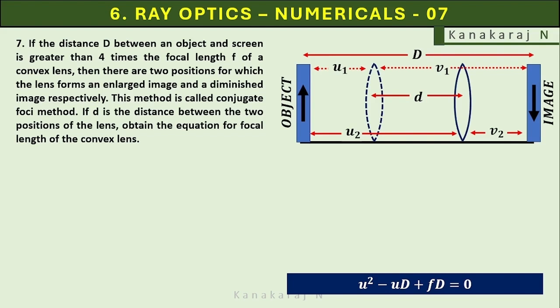The difference between the two positions of the lens is d which is equal to u2 minus u1. The solution of the quadratic equation is u equals D plus or minus root of D square minus 4Df upon 2.